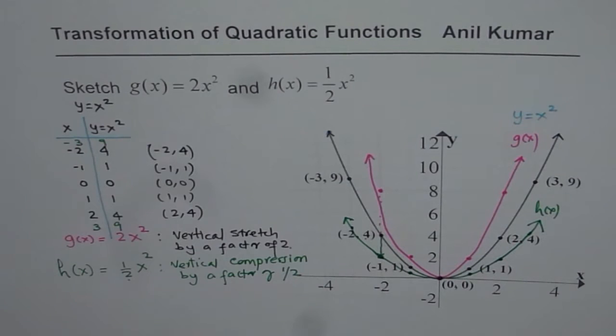So what really changes is the shape of parabola. It becomes narrower or wider. So that is how we can actually transform the function which has vertical stretch or compression.